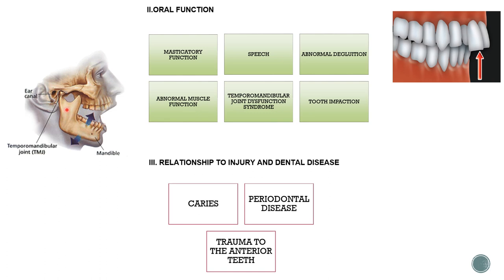If you place your finger in front of your ear and open and close your mouth, any pain there indicates temporomandibular joint dysfunction. This happens when occlusion isn't proper — malocclusion can finally lead to TMJ dysfunction syndrome, causing pain and difficulty opening the mouth. Then there is tooth impaction — many people get surgical treatment done on wisdom teeth because there is not enough space for them to erupt.